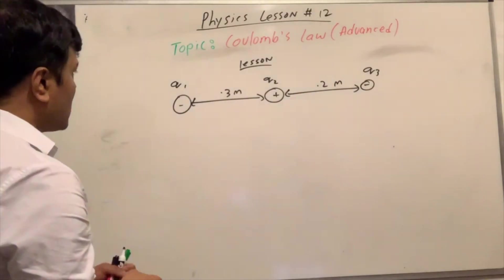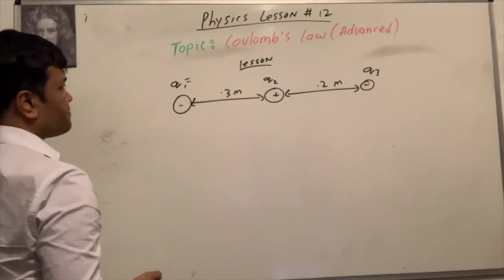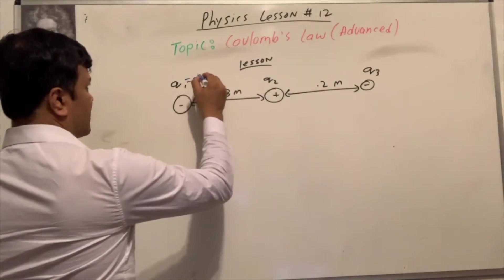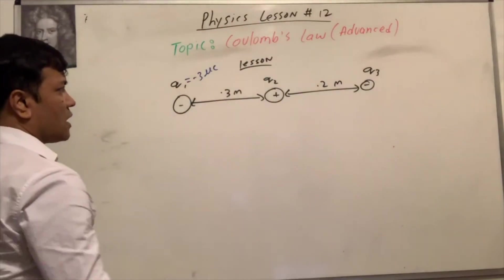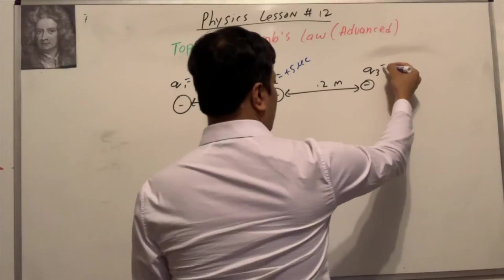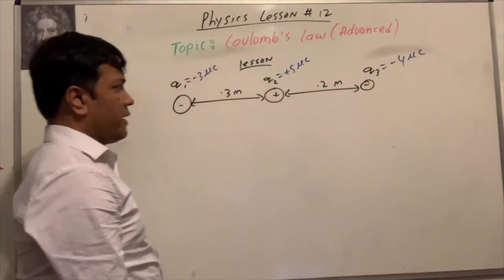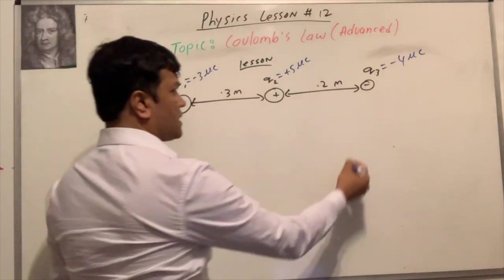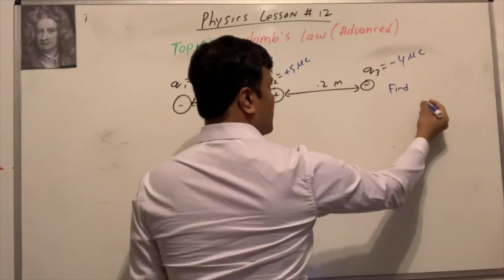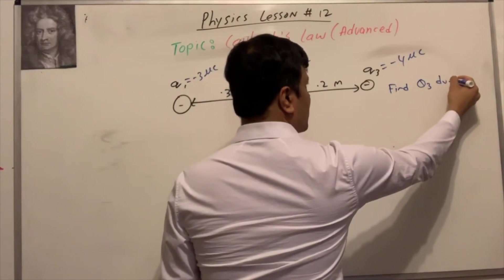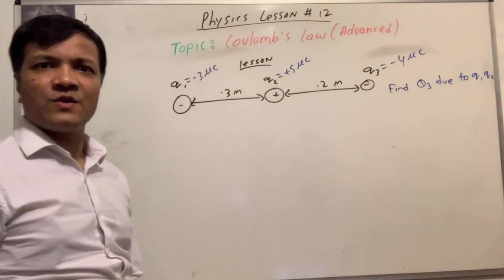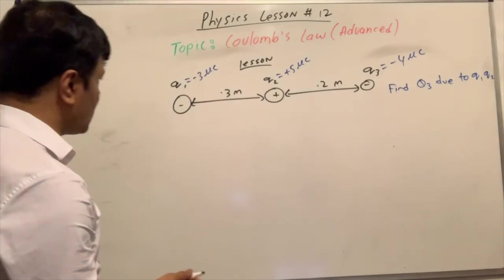The charge q1 is negative 3 microcoulombs, q2 is positive 5 microcoulombs, and q3 is negative 4 microcoulombs. We need to find the force on q3 due to q1 and q2. Let's do it.